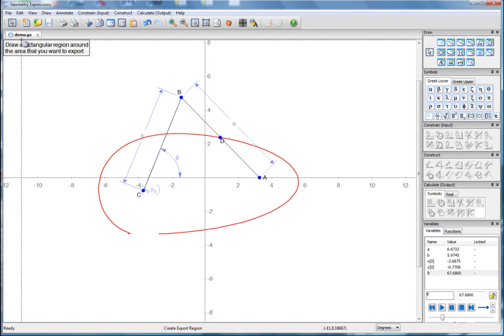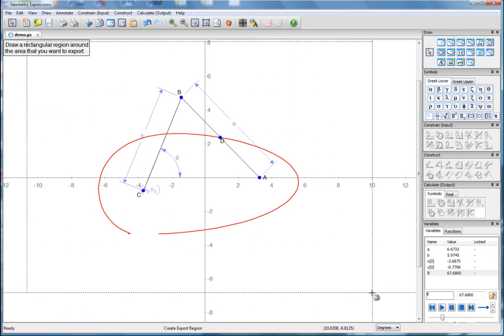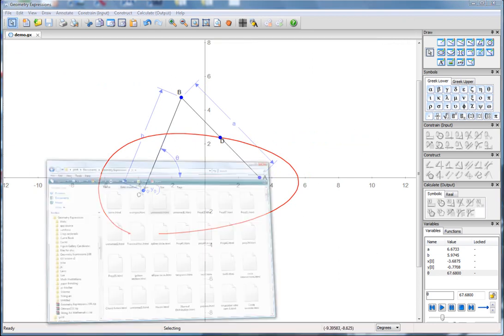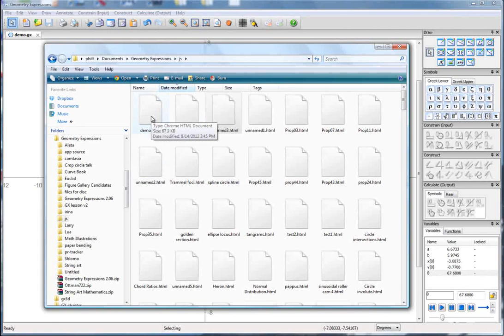So then we'll just hit OK, and draw a region. I'm going to leave lots of white space so that the app can move around a little bit as those variables are adjusted. Then you can just go to the folder where you saved that file, and open it up in a web browser.